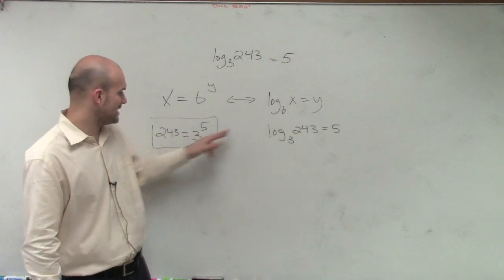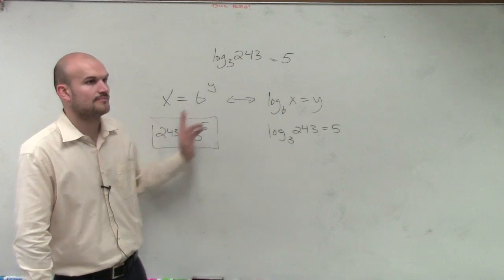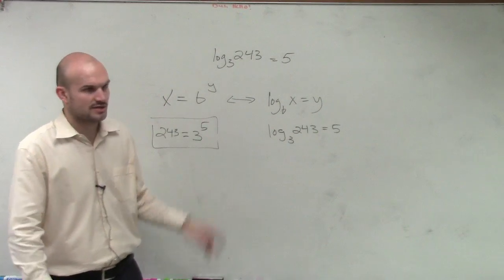That's why I always know 3 is my base of my exponent, because it's the base of the logarithm. OK, and then you just go 243 equals there, and then 5 goes to your exponent. OK?